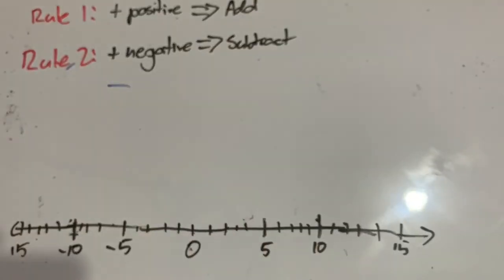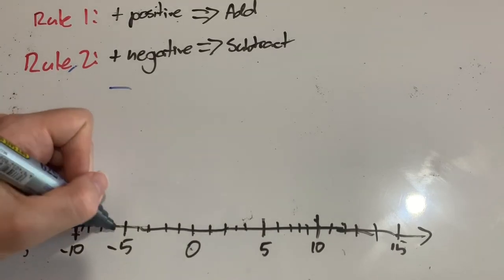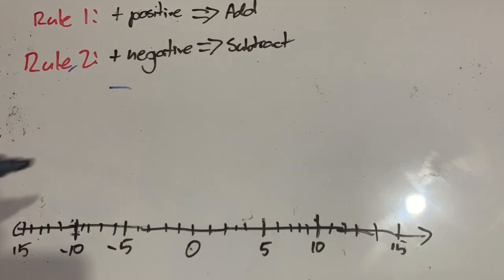My number line is a little messy now, but that's okay. You can see the numbers there, you can see the notches. So we can use this to help us work things out. Let's try another problem.